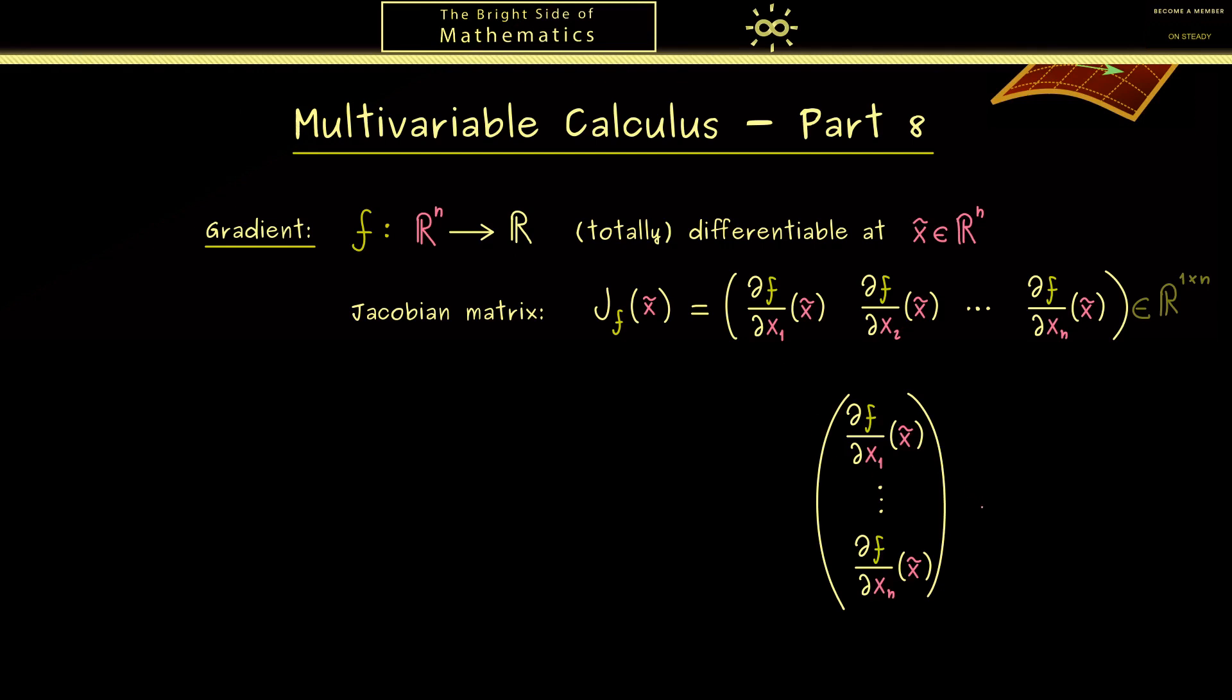In other words what one can do is to transpose the whole matrix. Hence we can see this now as a column vector in Rⁿ. And indeed this is what we call the gradient of f at the point x̃.